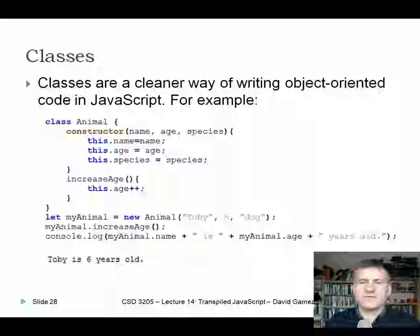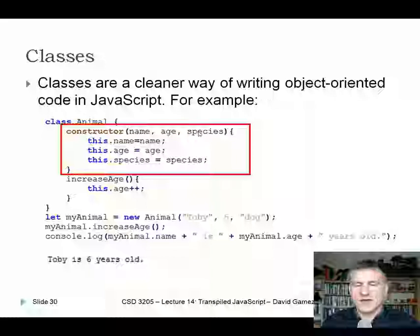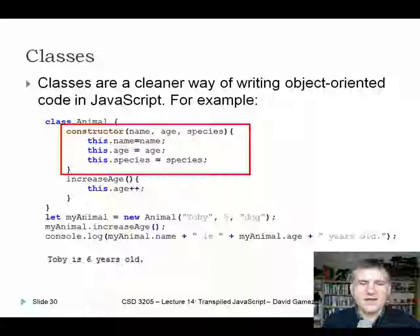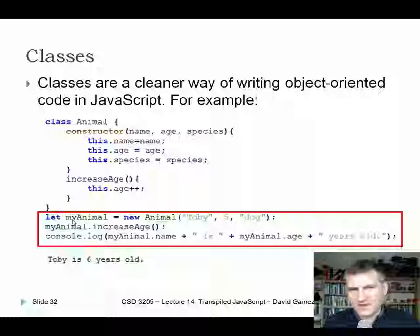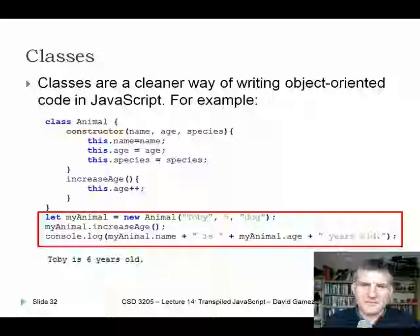You can use the class keyword to declare a class — in this case, an animal class. You have special reserved words like constructor, and there are getters and setters. You can also declare variables inside the class with public or private access. The constructor creates variables for name, age, and species. We can have a method inside the class, then do let my_animal = new Animal and call methods on it. It's a much, much nicer way of using classes in JavaScript.